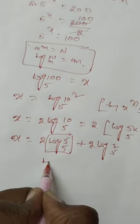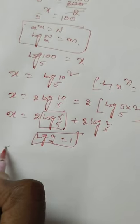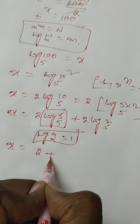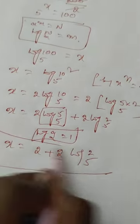Log 5 base 5 is equal to 1. Log a base a is equal to 1 formula. x is equal to 2 plus 2 log 2 base 5. This is the x value.